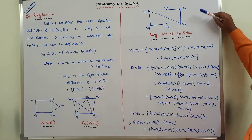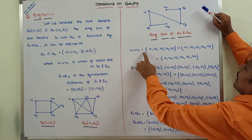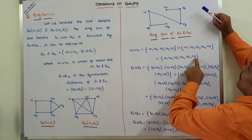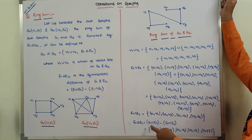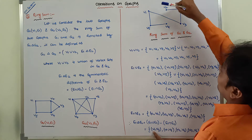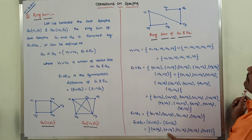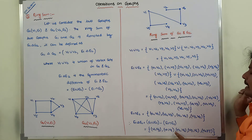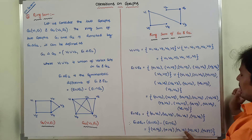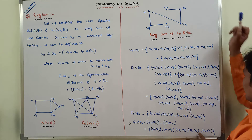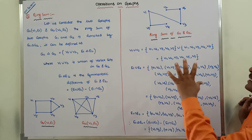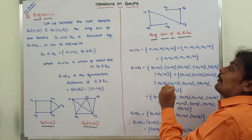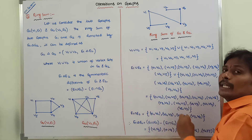So the resultant graph has vertex set V1 union V2 = {V1, V2, V3, V4, V5, V6}, and edge set E1 delta E2 = {V1,V3}, {V1,V5}, {V2,V6}, {V3,V6}, {V4,V5}. These edges are drawn in the ring sum result graph G1 delta G2. This is the third operation: the ring sum of G1 and G2.